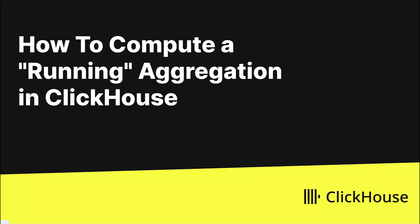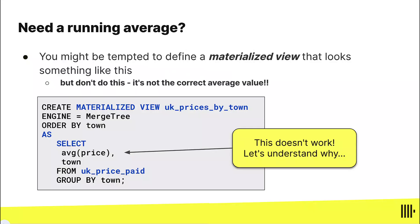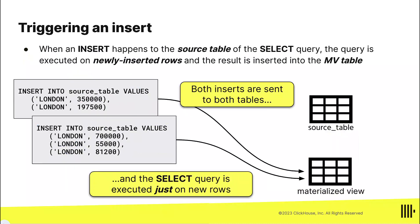Let's take a look at how to compute a running aggregation in ClickHouse. For example, suppose you want a materialized view that keeps a running average — numbers are constantly being inserted into the source table and you want to track the average of a column, like the average price of property prices grouped by town. Don't try this naive approach at home — it does not work, and it's important to understand why.